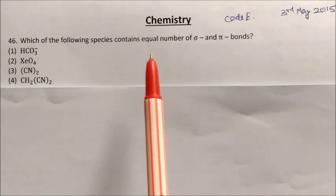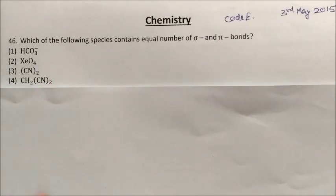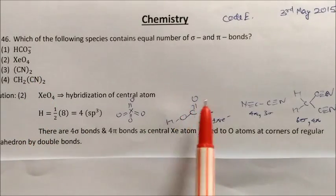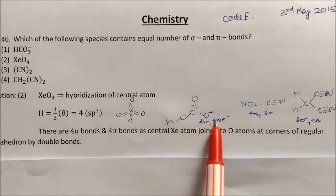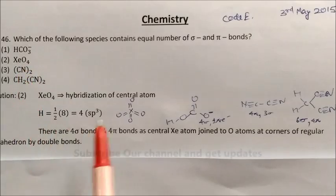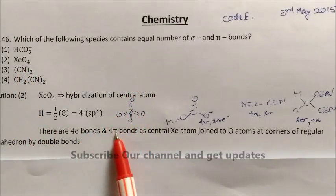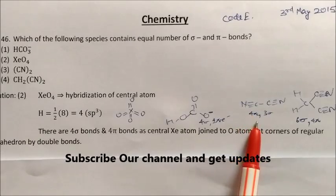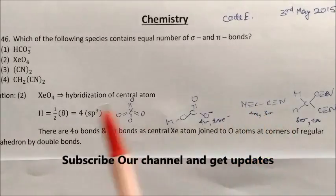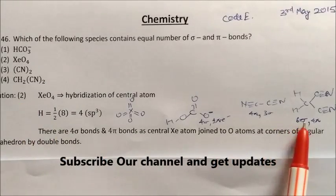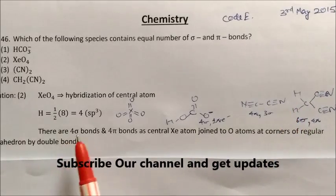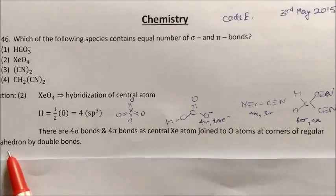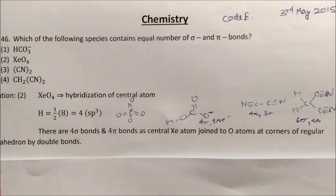Question: Which of the following species contains equal number of sigma and pi bonds? For bicarbonate, the structure consists of 4 sigma and 1 pi bond. For XeO4, the structure consists of 4 sigma and 4 pi bonds, so sigma and pi bonds are equal here. For C2N2 it has 4 pi and 3 sigma bonds, and for CH2=C=N2 it has 6 sigma and 4 pi bonds. So the answer is XeO4, option 2, where xenon is the central atom joined to oxygens at the corners of a regular tetrahedron by double bonds.